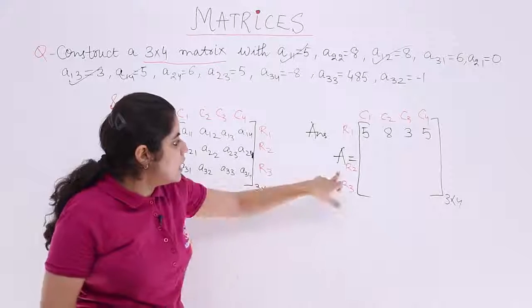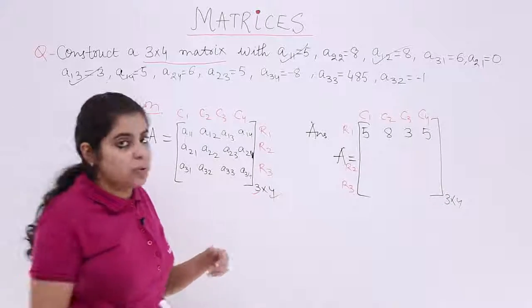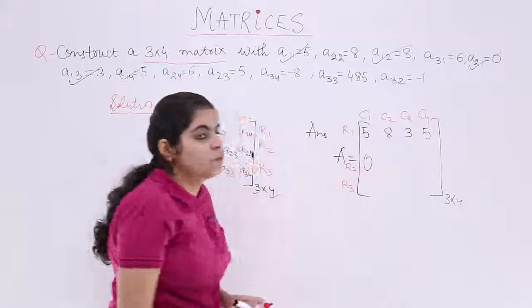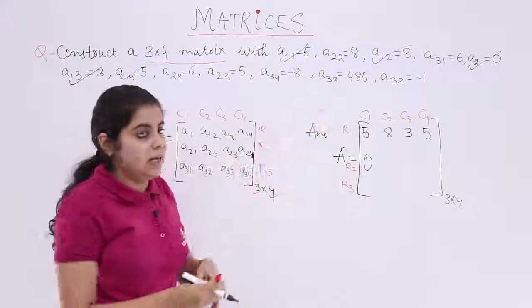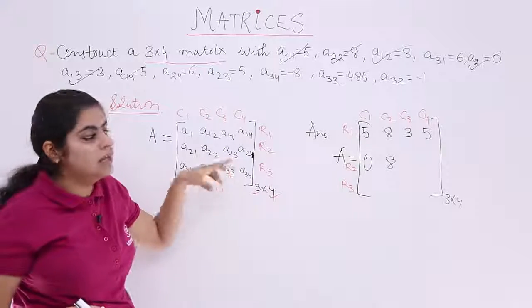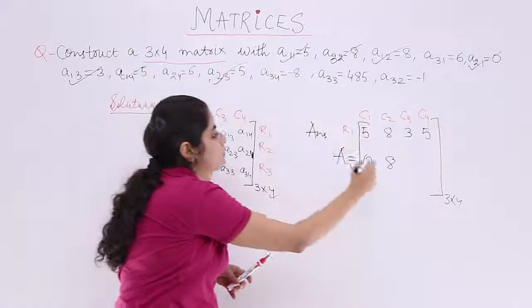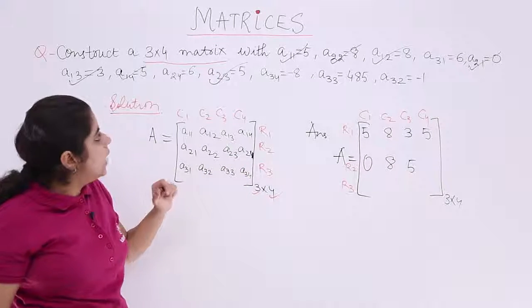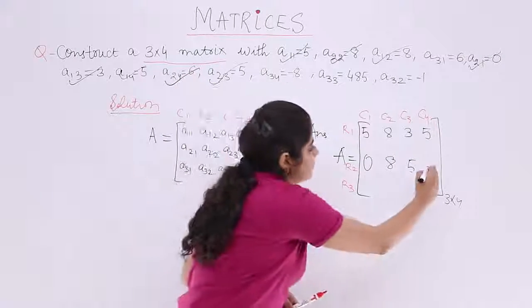Next, row 2, I have A21, A22. Where is A21? I should be finding A21. My A21 is here. It is 0. What about A22? Because here, I should be having A22. My A22 is here. It is 8. The next is the position of A23. Where is A23? A23 is basically here. It is 5. Last but not the least, I have A24. Where is A24? A24 is here. It is 6.